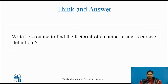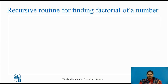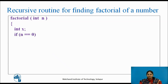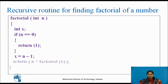Here we are trying to write the recursive routine for finding factorial of a number. We are finding the factorial of n. For this, a variable x has been declared. If the number is equal to 0, then return 1. If number is not equal to 0, i.e., if it is greater than 0, then n minus 1 value is stored in x. Then we are returning n into factorial of x. Here you can see that the factorial function is invoked again, but with x, which is nothing but n minus 1.